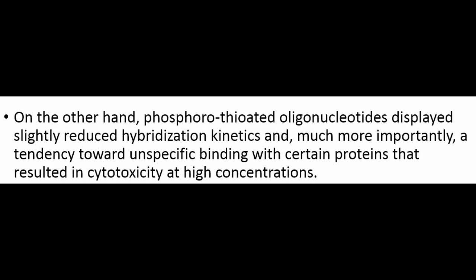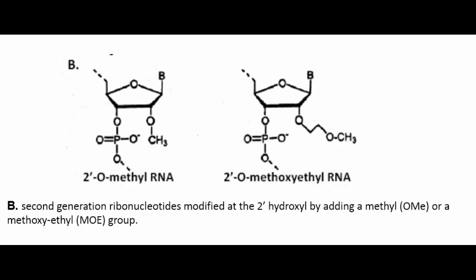The so-called second generation class of modifications directly addressed the non-specific and cytotoxic issues raised by phosphorothioates by introducing RNA oligonucleotides with alkyl modifications at the 2' position of the ribose sugar (Figure 2b). The two most important of these modifications are 2'-O-methyl and 2'-O-methoxyethyl RNAs.